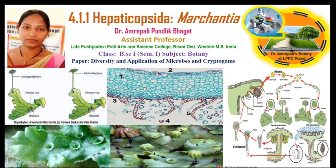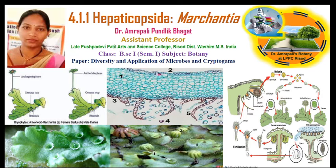Now we are taking a transverse section through the thallus of a Marchantia. This cross section shows a photosynthetic zone, a large storage zone, rhizoids, and scales. This one is the complete diagrammatic representation of a Marchantia life cycle.